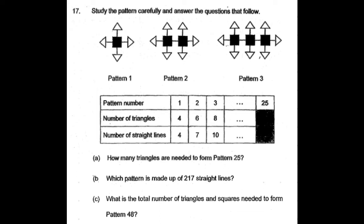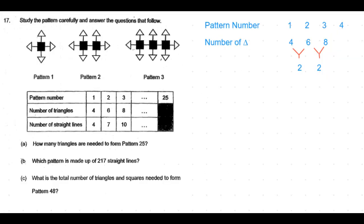Let's look at this pattern. Pattern numbers 1, 2, and 3 — the number of triangles is given as 4, 6, 8. This pattern has a constant difference, so this method is called the constant difference method. In this case, the constant difference is 2.